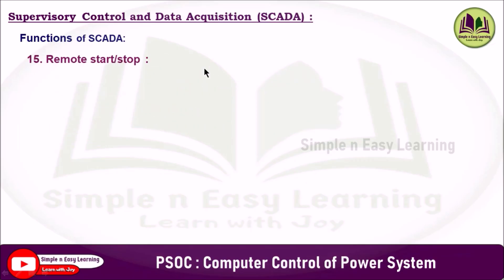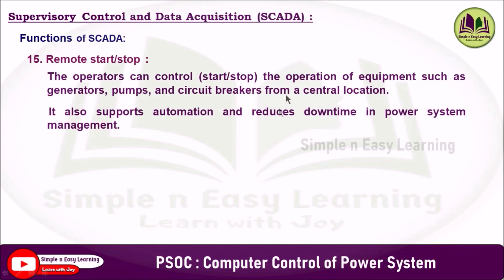The fifteenth function is remote start and stop of equipment. Operators can start or stop equipment such as generators, pumps, or circuit breakers from a central location. This function enhances operational efficiency and safety by enabling quick response to changing system conditions, scheduled operations, or emergency shutdowns without the need for on-site personnel. It also supports automation and reduces downtime in power system management.